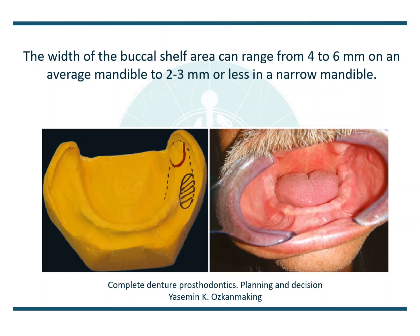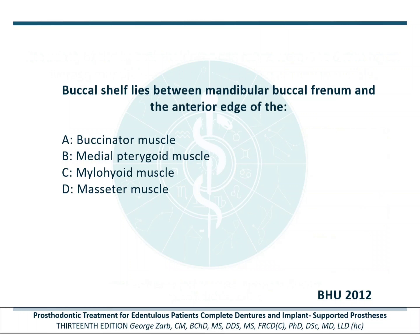This question was asked in BHU 2012: The buccal shelf lies between the mandibular buccal frenum and the anterior edge of which muscle? As we have discussed, the answer is D, that is the masseter muscle.